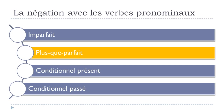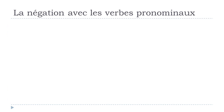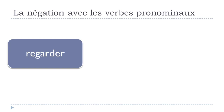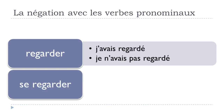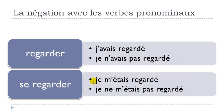Le plus-que-parfait and le conditionnel passé behave like le passé composé because they are also compound tenses. For REGARDER at the plus-que-parfait: J'AVAIS REGARDÉ, negative JE N'AVAIS PAS REGARDÉ. For SE REGARDER: JE M'ÉTAIS REGARDÉ, negative JE NE M'ÉTAIS PAS REGARDÉ. Keep M'ÉTAIS together, and PAS comes right after the auxiliary.